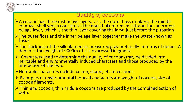Examples of environmentally induced characters are weight of the cocoon and size of the cocoon filaments. Thin end cocoons and thin middle cocoons are produced by the combined action of both heritable characters and environmentally induced characters.